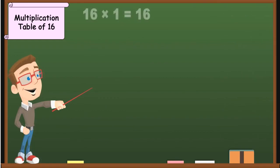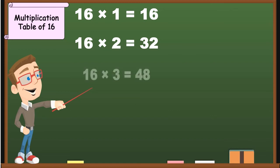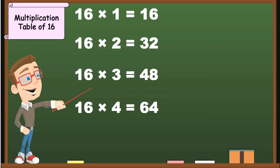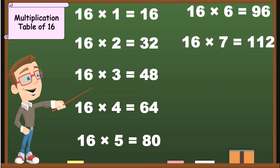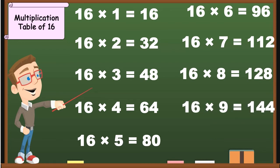16 1's are 16, 16 2's are 32, 16 3's are 48, 16 4's are 64, 16 5's are 80, 16 6's are 96, 16 7's are 112, 16 8's are 128, 16 9's are 144, 16 10's are 160.